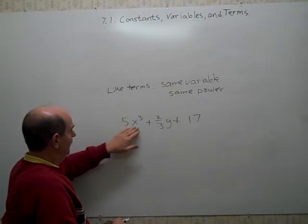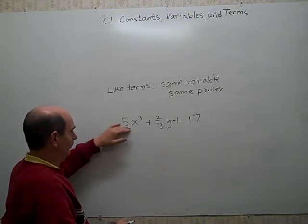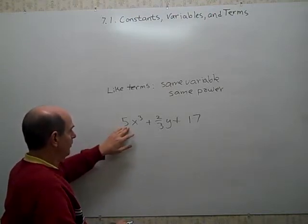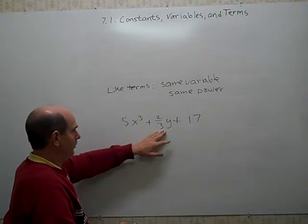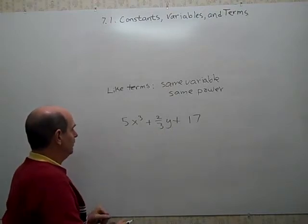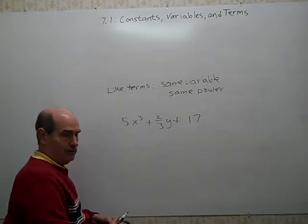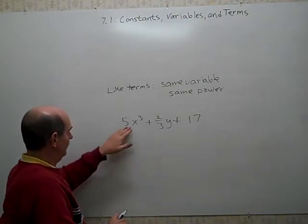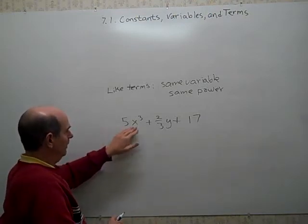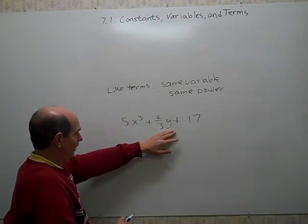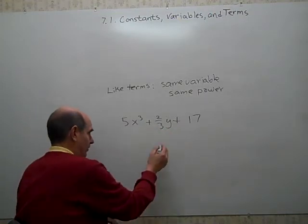The number that appears in front of the variable is referred to as the coefficient. So 5 is a coefficient. 2 thirds is a coefficient. So that's just, again, introducing some terminology. If you're asking the coefficient of this term, you'd say 5. Name the coefficient of this term, you'd say 2 thirds.